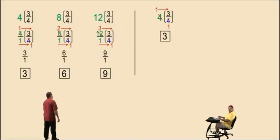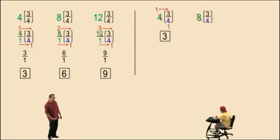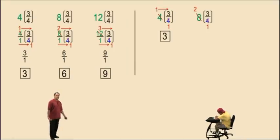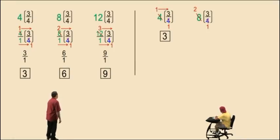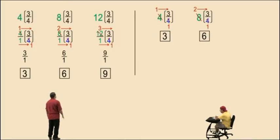Let's try another one: eight times three-fourths. Notice eight is the whole number and four is the denominator, so you can divide those out. Eight divided by four is two, and two times three is six — and that's it. You can disregard that one because in all these fractions, the one didn't matter, since anything divided by one is itself.